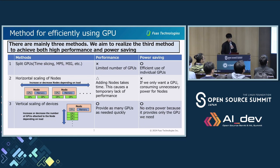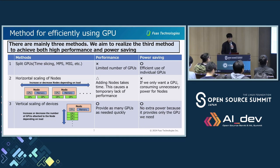The third method is to vertically scale the number of GPUs in the server. This method can provide as many GPUs as the user needs quickly, depending on the user's workload. This meets both high performance and power saving. So we are aiming to realize the third method: vertical device scaling.